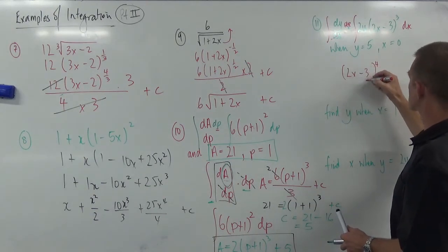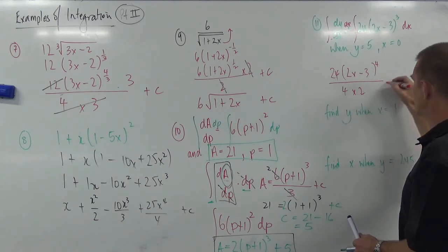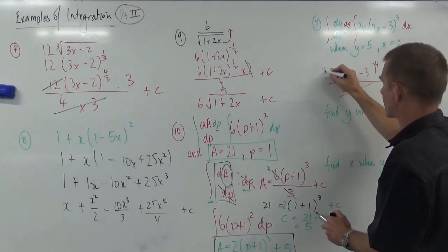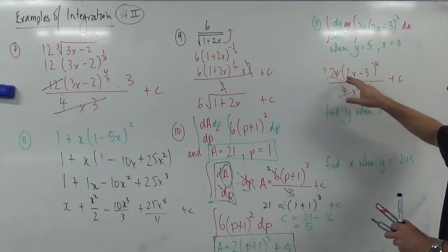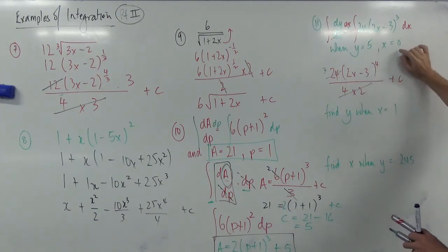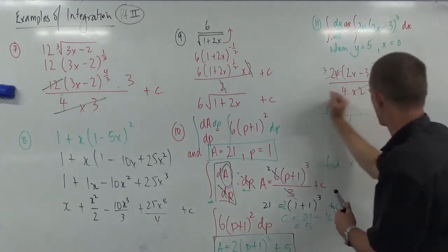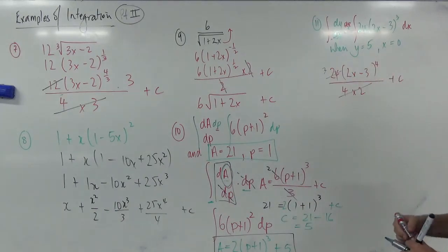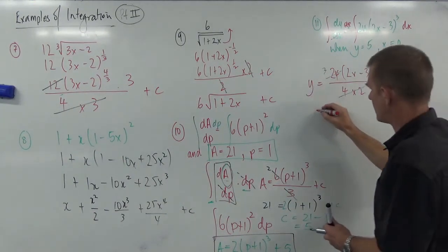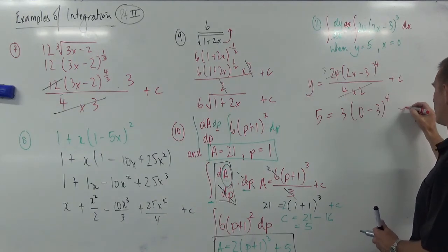Raise the power by 1. Okay. 2x minus 3 in there. 24 is out the front. Divide by the new power, and divide by the derivative of the inside, plus C. So, if we cancel that down, you can see there's going to be 8 on the bottom line. 8 goes into that 3 times. So, that's going to be a bit neater, isn't it? It's going to be 3 lots of 2x minus 3 to the power of 4, plus C. Notice I've got this information here. Now, this makes it easy, because when x isn't equal to 0, that's just going to be minus 3 to the power of 4, isn't it? So, I might get rid of this. I'll come back and do them later if we need to. They were just extras. So, let's put this in. So, wouldn't we have here, we would have y equals, so y is 5, equals 3 brackets. 2 lots of 0 is just 0 minus 3 to the power of 4, plus C.